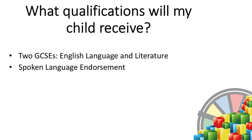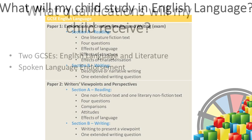Your child will be receiving two GCSEs as part of their English study. The first will be in English language — the one that students need for progressing to sixth form, to college and for employment. They will also be receiving an additional GCSE in English literature, as well as the spoken language endorsement, which is graded at pass, merit and distinction and is an opportunity for your child to present a speech and demonstrate their ability to communicate and respond to questions.